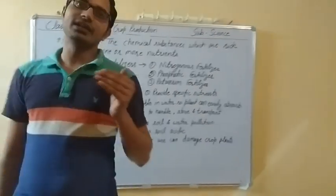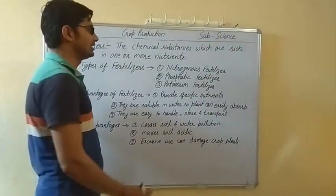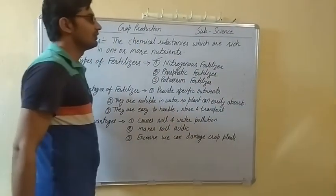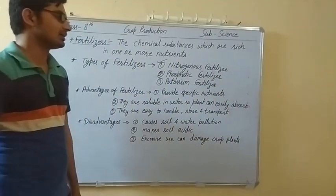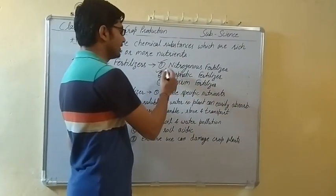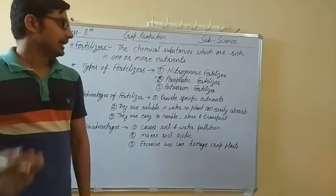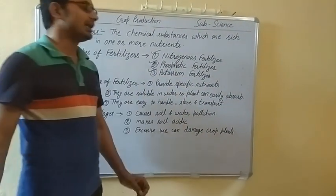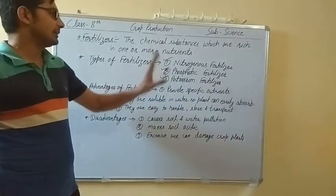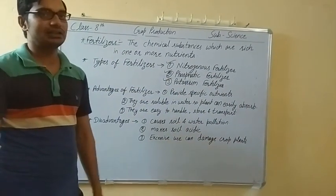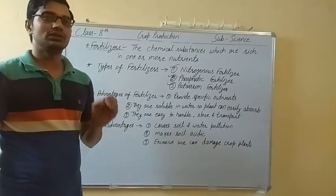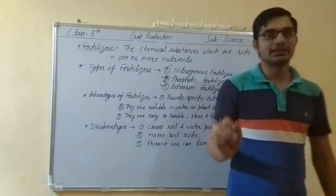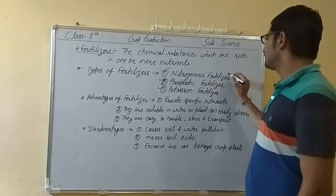There are different types of fertilizers. The first one is nitrogenous fertilizer, the second is phosphatic fertilizer, and the third is potassium fertilizer. These are the types of fertilizers which are commonly used.